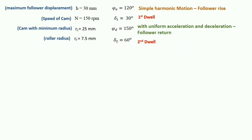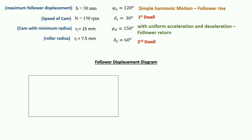Now we will make the follower displacement diagram. First, for Simple Harmonic Motion during ascent, we create a rectangle box. The horizontal side represents phi A and the vertical side represents displacement at a suitable scale. Since phi A = 120 degrees and we take 18 cm = 360 degrees, phi A corresponds to 6 cm. We divide phi A into 6 equal parts from 0 to 6 and draw vertical lines.